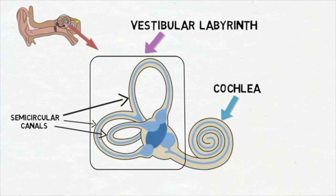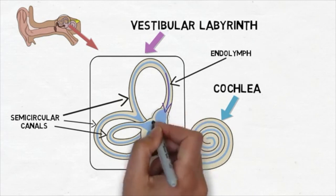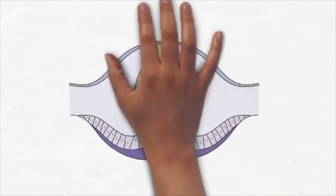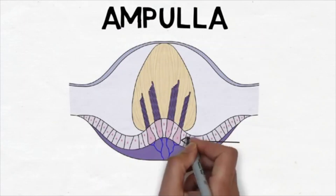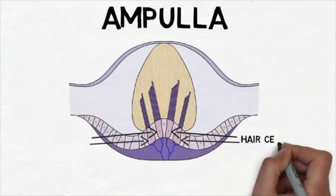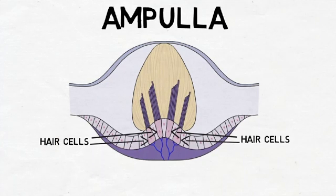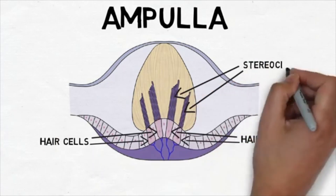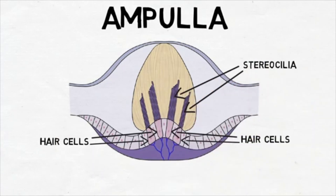The semicircular canals are filled with a fluid called endolymph. When the head is rotated, it causes the movement of endolymph through the canal that corresponds to the plane of movement. The endolymph flows into an expansion of the canal called the ampulla, within which there are hair cells — the sensory receptors of the vestibular system. At the top of each hair cell is a collection of small hairs called stereocilia. The movement of the endolymph causes movement of these stereocilia, which leads to the release of neurotransmitters to send information about the plane of movement to the brain.